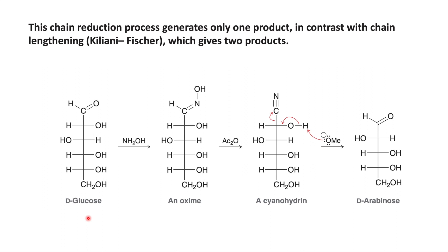Comparing Wohl degradation with Kiliani-Fischer synthesis: in Kiliani-Fischer synthesis you get two products from one starting material, but in Wohl degradation process you get only one product from one starting material. So the difference is one is chain lengthening and in Wohl degradation only a single product is formed. Thank you for watching this video - I hope you understand these two reactions. If there is any query you can ask in the comment section.